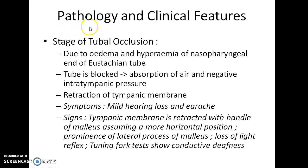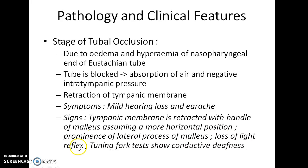The disease consists of five stages. The first stage is the stage of tubal occlusion. It is due to edema and hyperemia of the nasopharyngeal end of the eustachian tube, causing it to become blocked. There is absorption of air and negative intra-tympanic pressure, leading to retraction of the tympanic membrane. Symptoms are mild hearing loss and earache. Signs include retraction of the tympanic membrane with the handle of malleus assuming a more horizontal position, prominence of the lateral process of malleus, loss of light reflex, and tuning fork tests showing conductive hearing loss.